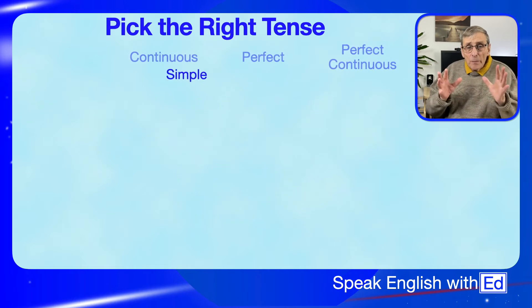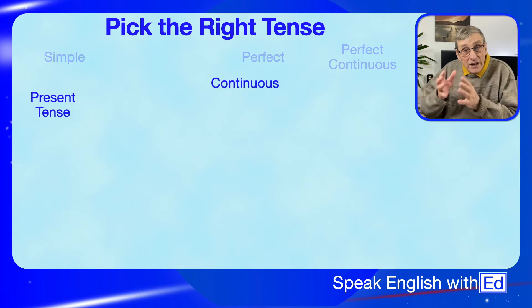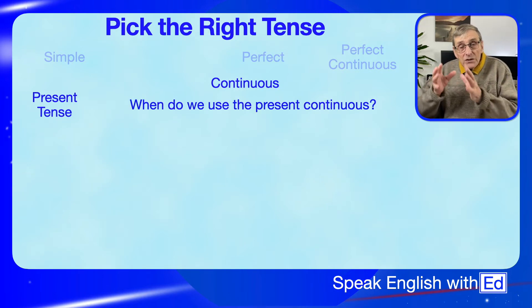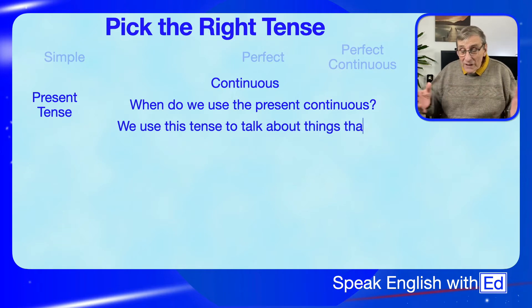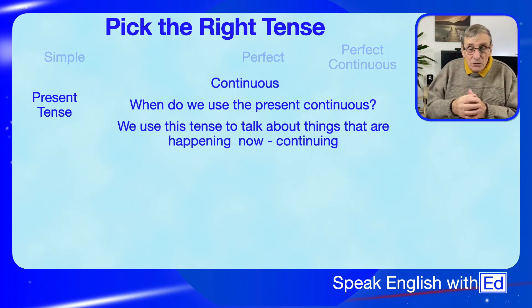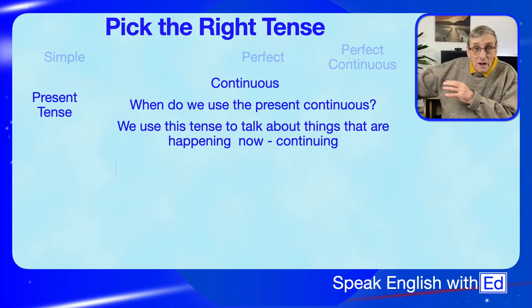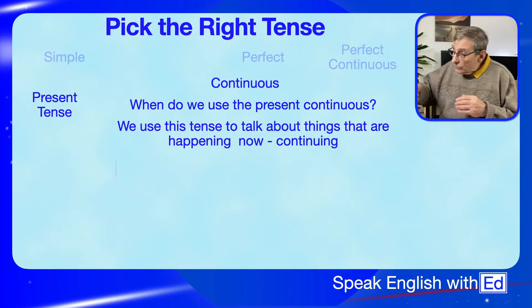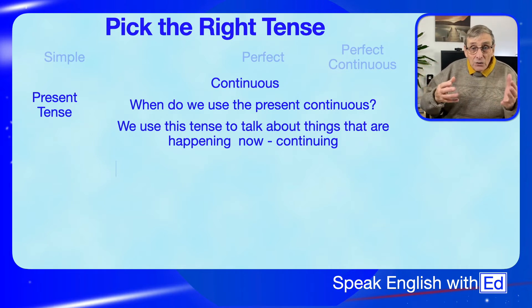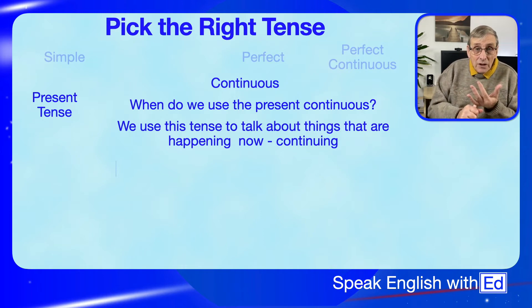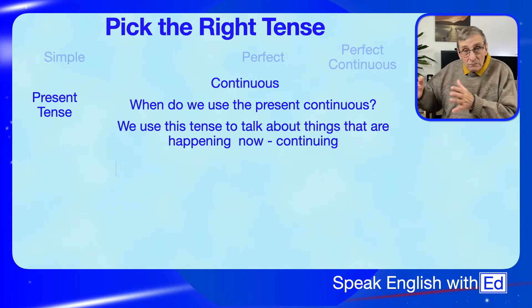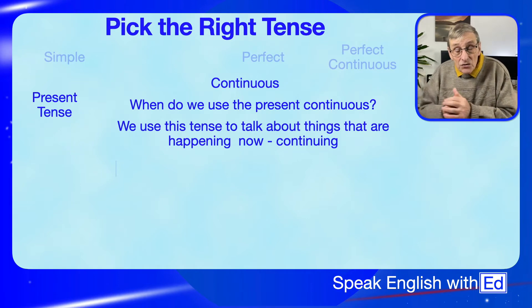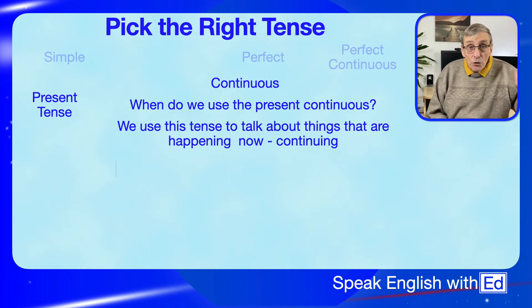Now let's move on to the present continuous tense. When do we use it? When we're doing something continuously — what we're doing now. We talk about what we're doing now in the present continuous because generally speaking what you're doing now is going to continue at least for a few minutes. For example, what are you doing now? Well, I'm working — and you're going to be working all day, or just for a few minutes until lunch time.